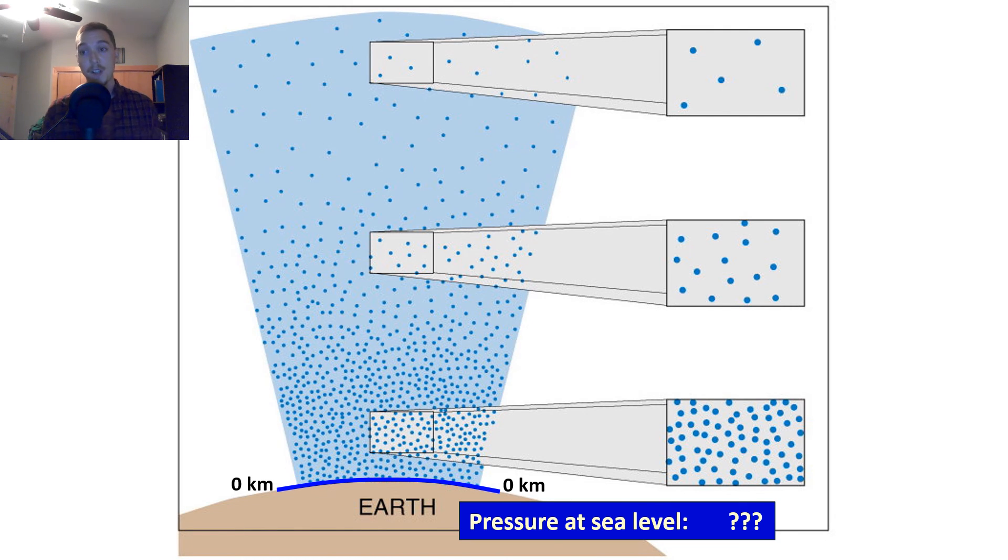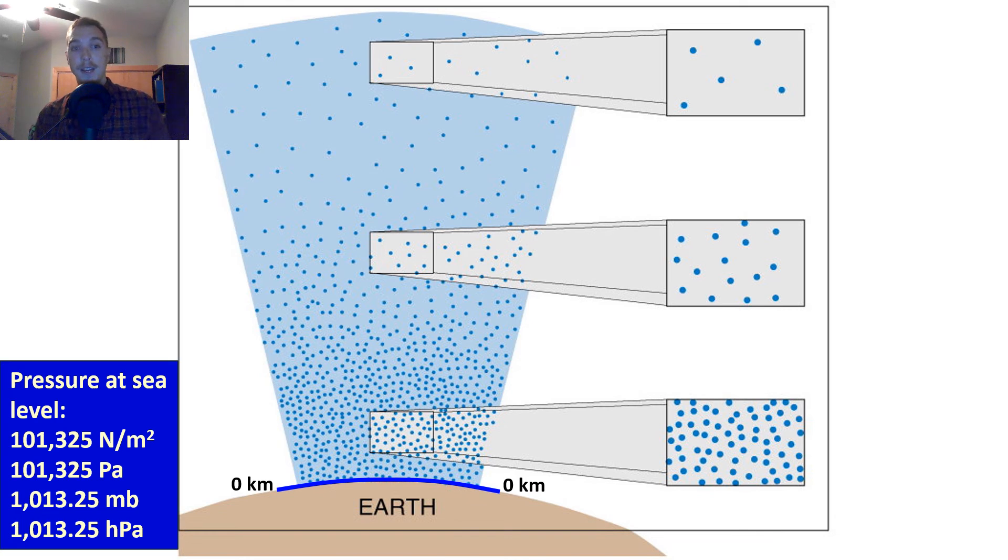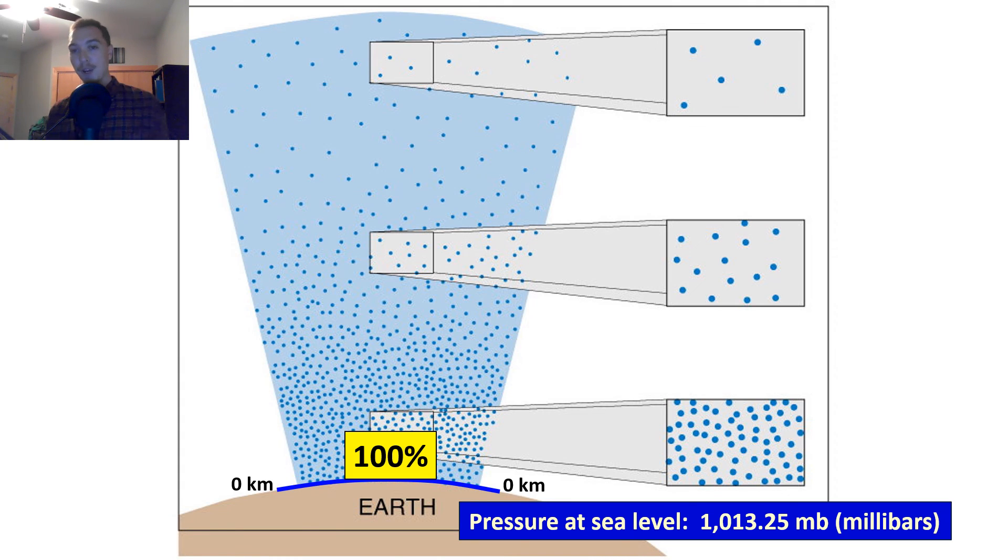What's the pressure at sea level? It's 101,325 newtons per meter squared, or 101,325 pascals, or 1,013.25 millibars, or 1,013.25 hectopascals. We use way too many different units for this, but just know and be very cognizant of what units you're looking at, and if you need to do any conversions. Notice that there are two orders of magnitude different between millibars and pascals. That could really mess up an equation if you do that the wrong way.